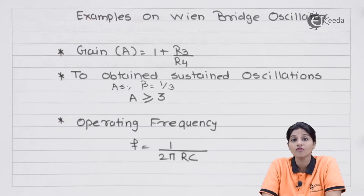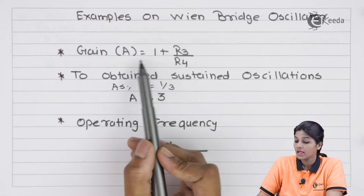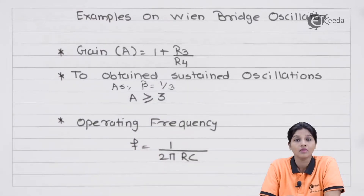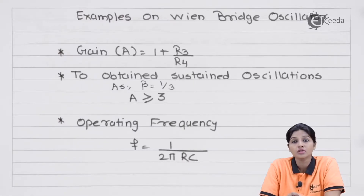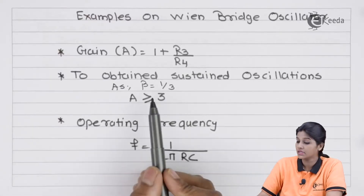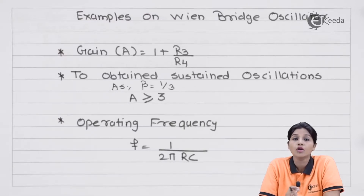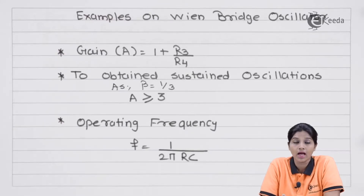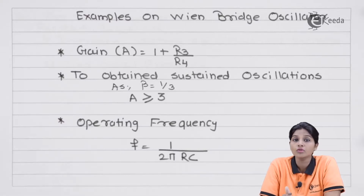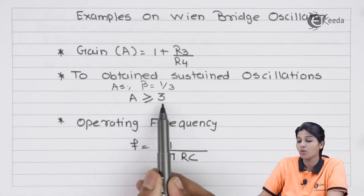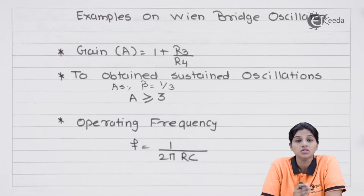The gain of the op-amp is given by A = 1 + R3/R4, the formula for a non-inverting op-amp configuration. The feedback network — the Wien bridge — has a feedback factor β = 1/3. Per Barkhausen's second criteria, |Aβ| must be greater than or equal to 1. With β = 1/3, the gain must be greater than 3. So the circuit can provide sustained oscillations only when A > 3.